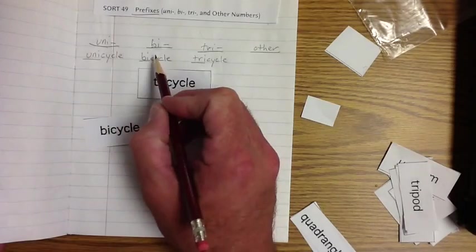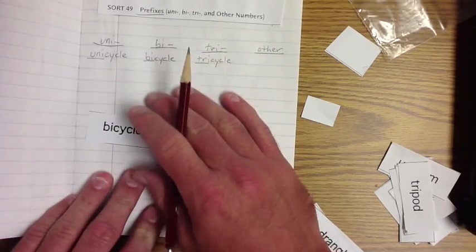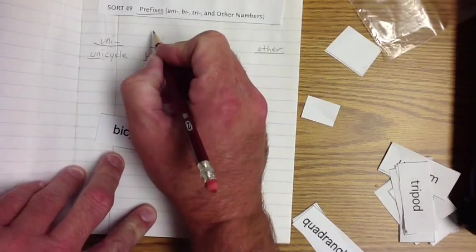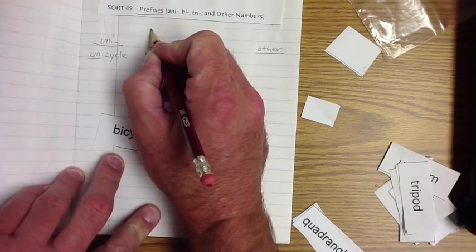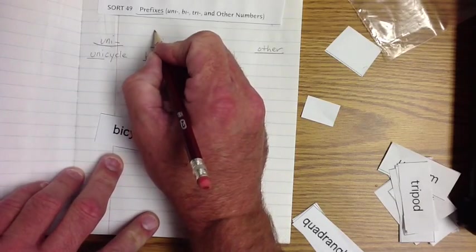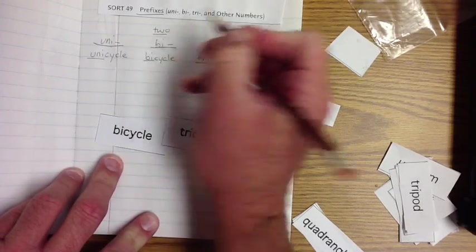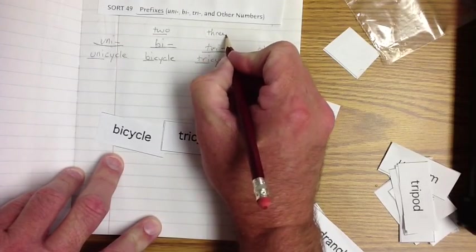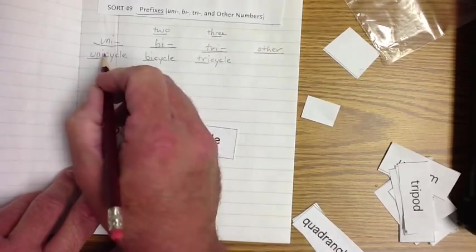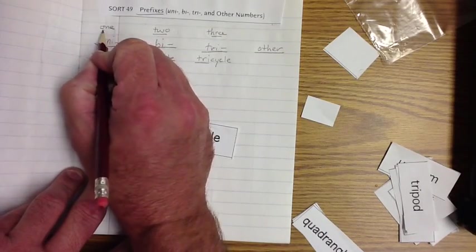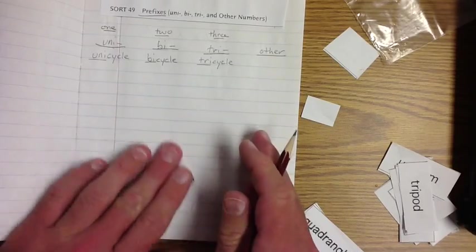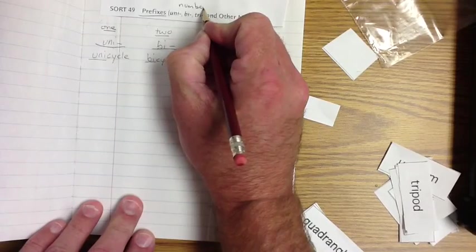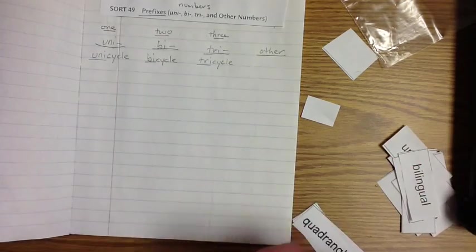So what does uni, bi, and tri mean when we're talking about cycles? Well, of course, bicycle means that there's two wheels. So when we talk about bi, that means two. So tricycle is three. And uni means one. And so when we're talking about these prefixes today, we're actually talking about numbers. Alright, so let's look at another word here.